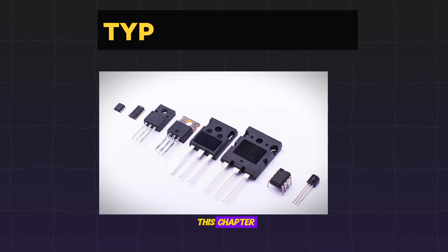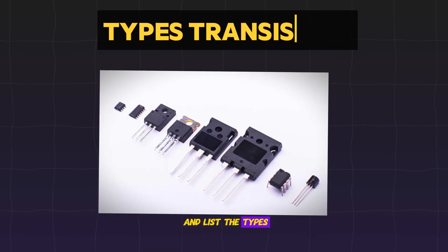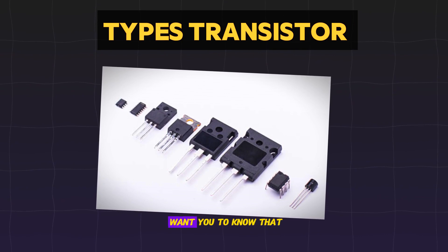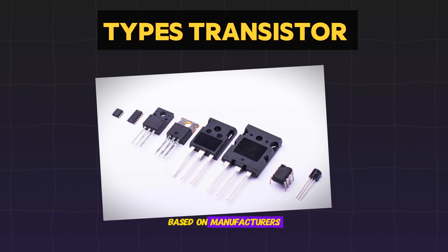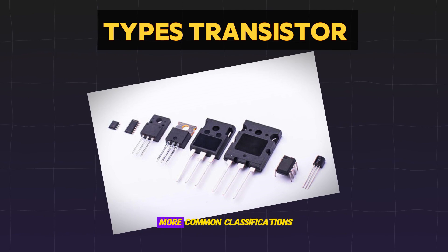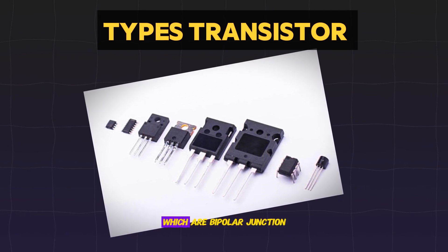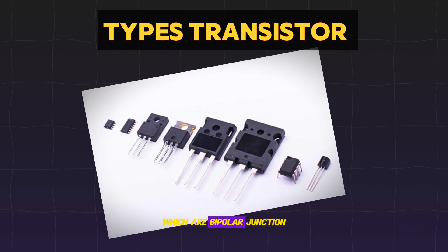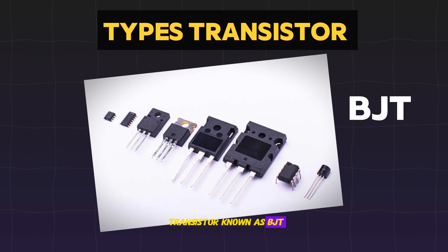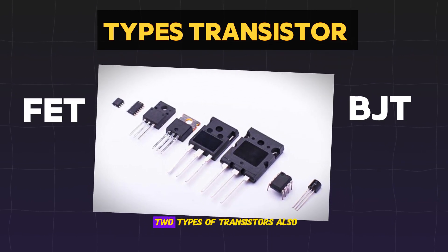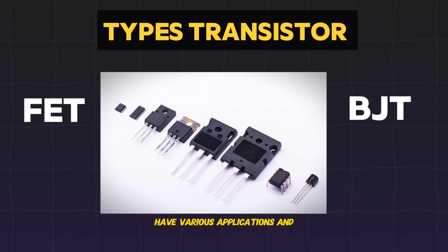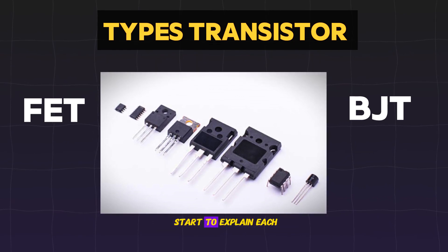Welcome back. In this chapter, I'm going to explain and list the types of transistors. There are various types of transistors based on manufacturers, but the more common classifications are bipolar junction transistor, known as BJT, and field effect transistor, known as FET. These two types of transistors also have various applications and uses, so let me explain each of them one after the other.